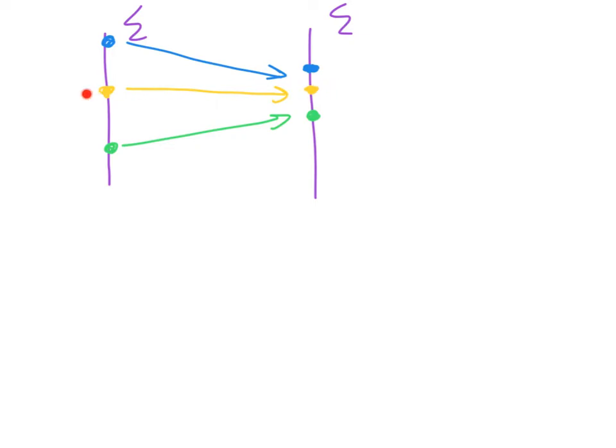And so from this, we can see that this particular limit cycle is actually stable, because after one time through the Poincaré map, points have gotten closer to the point of the limit cycle.